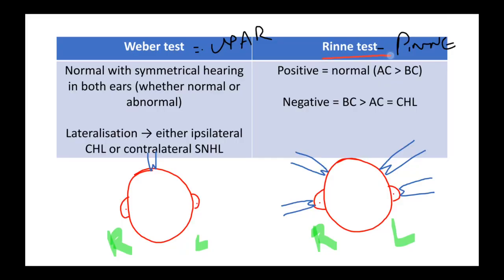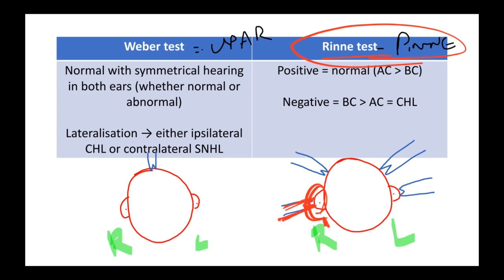To remember this, you can think of Rinne under the pinna. You place the tuning fork across the pinna — the auricle — and then comes Weber's test.